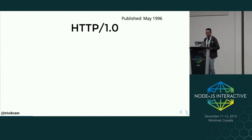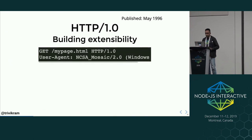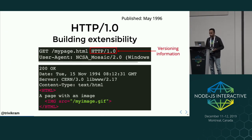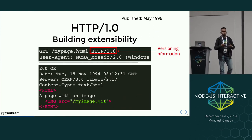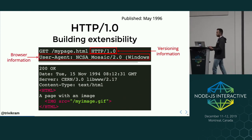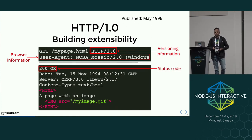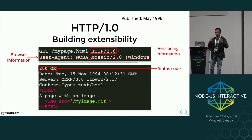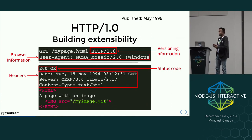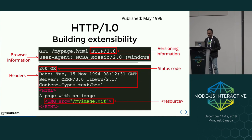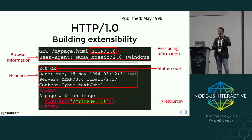HTTP/1.0 was introduced in May 1996 and it built extensibility. Now you can send version information because there is more than one HTTP protocol. You also send browser information because there are multiple browsers. You send a status code because not all requests are successful — sometimes there are redirects, client errors, or server errors. There are headers with data information: what kind of server, what content type. So instead of sending plain text, you can send JSON and other types, and you can include multiple resources in the HTML file.